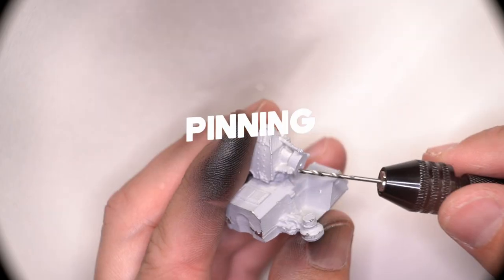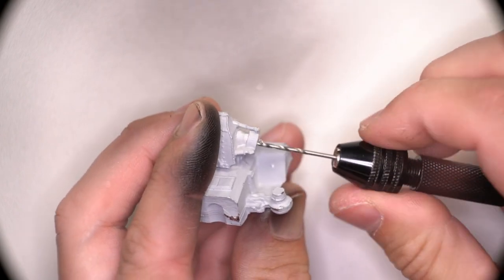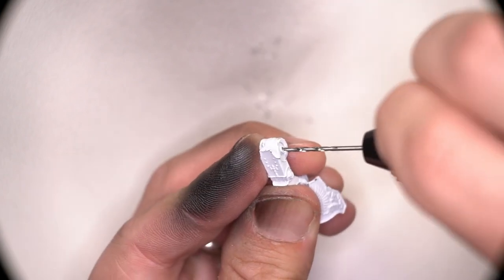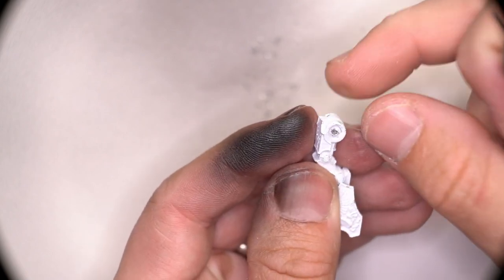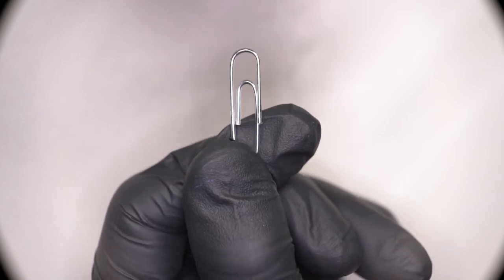Now, I don't want to magnetize every single part of this Warhound, it is only going to be used for display purposes anyway. I'm not doing any gaming with this. So I will be pinning the legs. We're going to start by using a scalpel to create an initial hole, then move into actually using a hand drill to create a larger hole, as you can see here in the legs and in the hip joints.